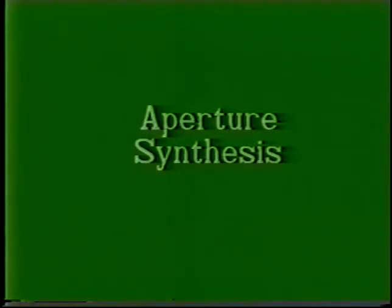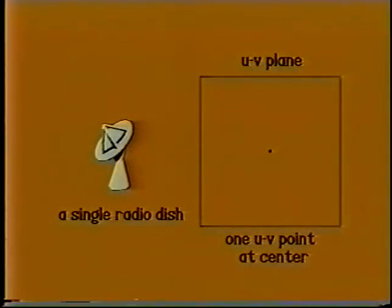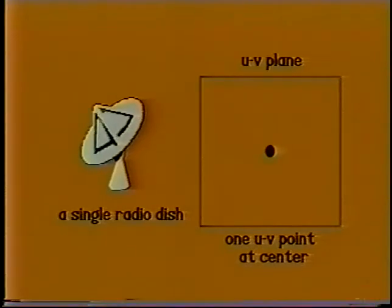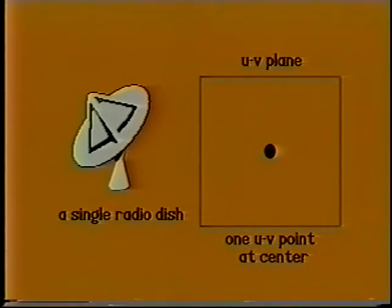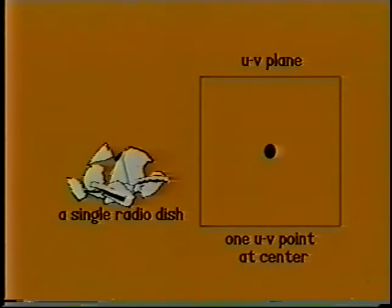Part 2: Aperture Synthesis. To make the best image, we must measure every point in the UV plane. A single radio antenna measures only the point at the center of the UV plane. As the size of the antenna increases, the point expands to a small circle. If we make the dish too big, with a single dish, coverage of the UV plane is limited.